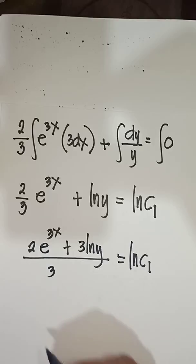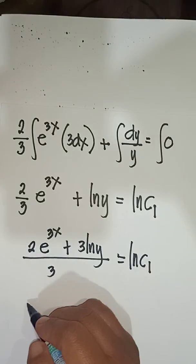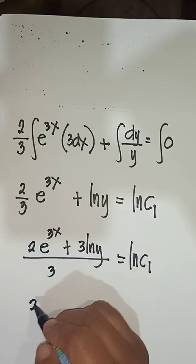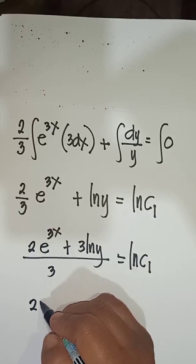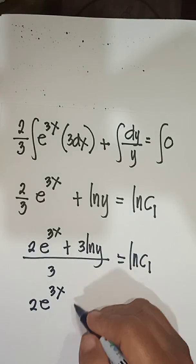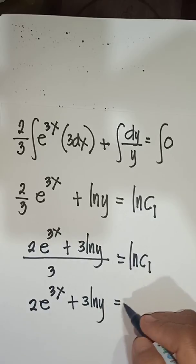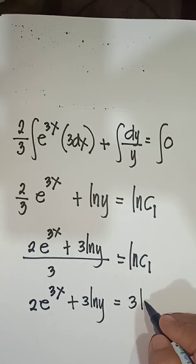Therefore, you will have 2e^(3x) plus 3 ln of y. Cross multiply: ln of c sub 1.